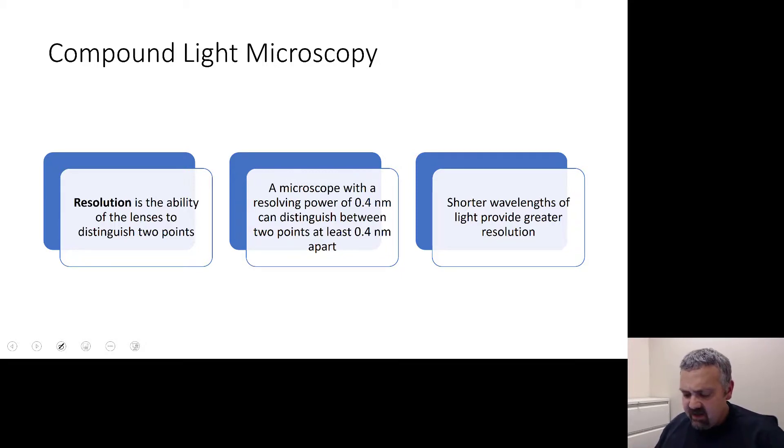So like I have here, a microscope with a resolving power of 0.4 nanometers can distinguish between any two points as long as they're 0.4 nanometers or farther apart. So if they get closer than 0.4 nanometers, instead of being two individual structures, you kind of see it as a blurry mass. They lose their clear defined edges and you no longer can get a good looking image. So really, the better the resolution, the higher the magnification.